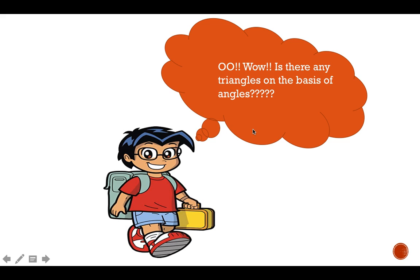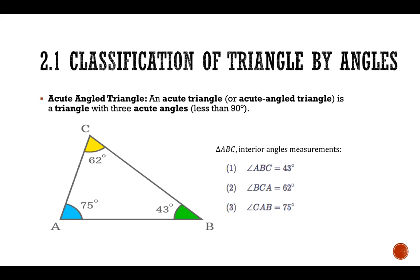Now we discuss triangles on the basis of their angles. An acute angle triangle is a triangle with three acute angles, each less than 90 degrees. For example, angles of 62, 75, and 43 degrees are all less than 90 degrees, so that triangle is called an acute angle triangle.